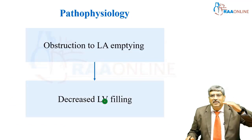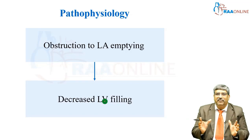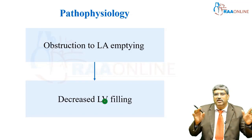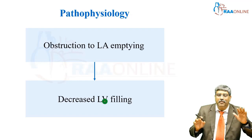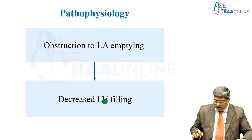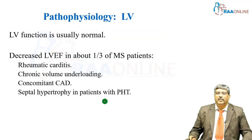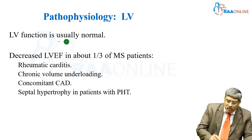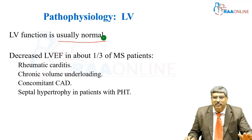There is an obstruction at the mitral level, so there is an underfilled left ventricle. These are all the various pathophysiological features which happen with mitral stenosis. Left ventricle function is usually normal, but underfilled.